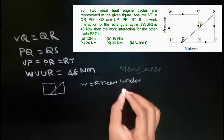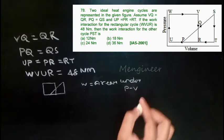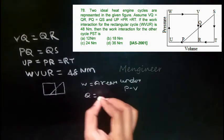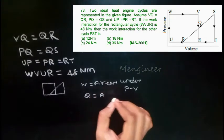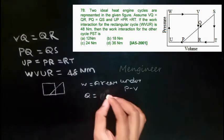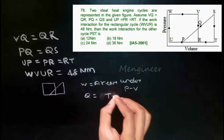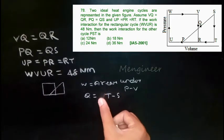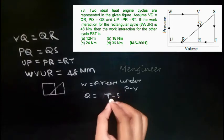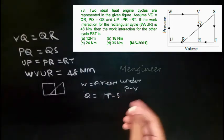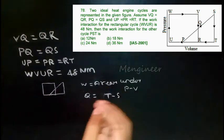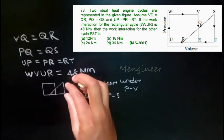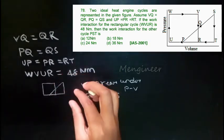You know that work done is area under PV curve. To find heat transfer, it is the area under TS curve. The curve given here is PV—the graph is drawn between pressure and volume. To find the work, we have to find the area.